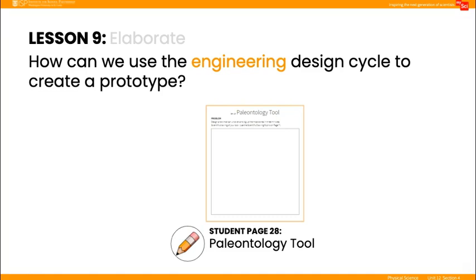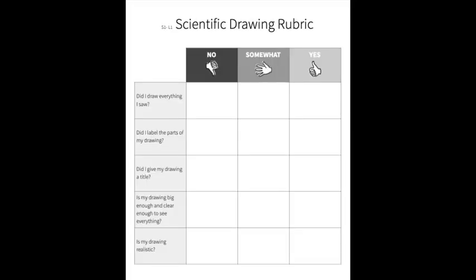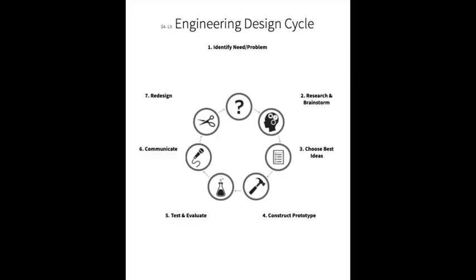In the elaborate, direct students to the paleontology tool sheet, student page 28. There, they should work with their partner or group to research, brainstorm, and draw their ideas. Remind them to refer to the scientific drawing rubric, student page 7, as they sketch their tool. Once students have chosen their best idea — engineering design cycle step three — distribute materials to them to begin step four of the design cycle: construct a prototype.